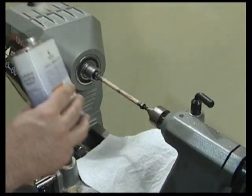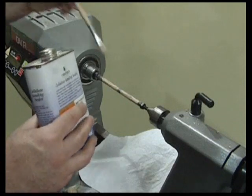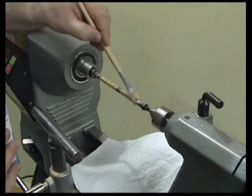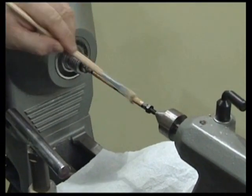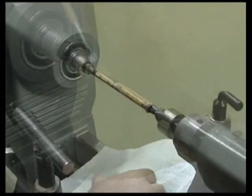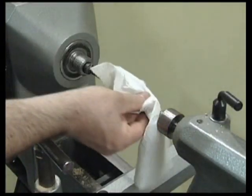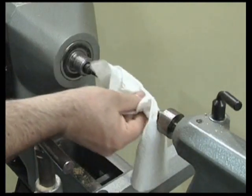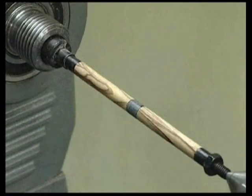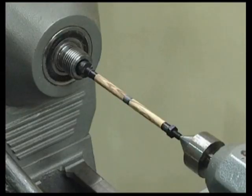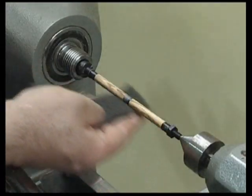Once the sanding is complete, a sanding sealer should be applied. Wipe off the excess. Then cut back with fine abrasive.